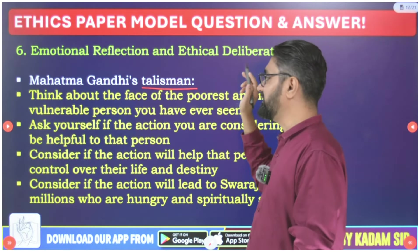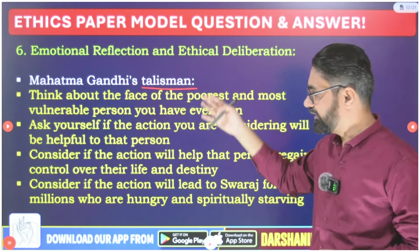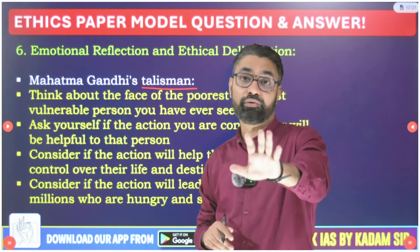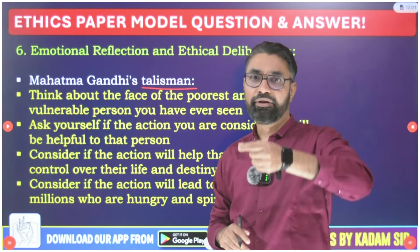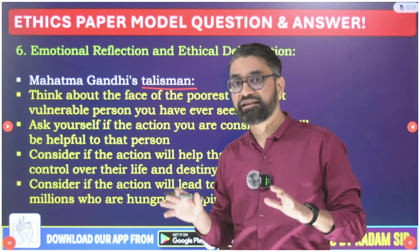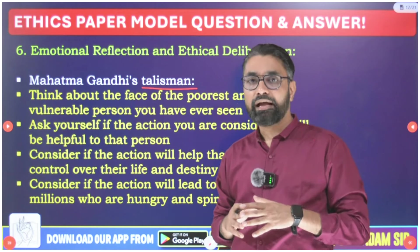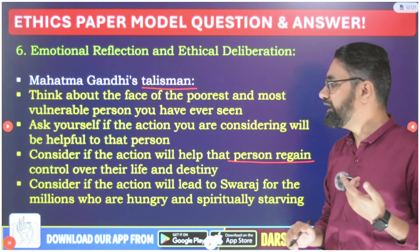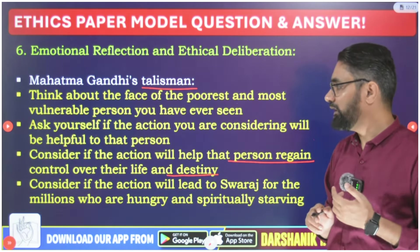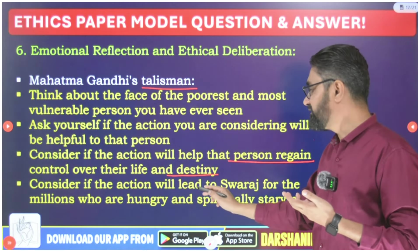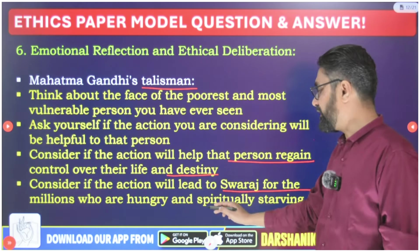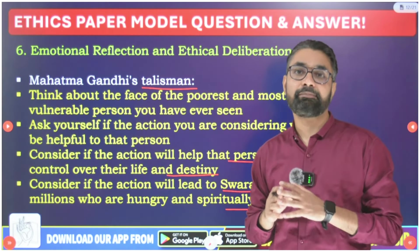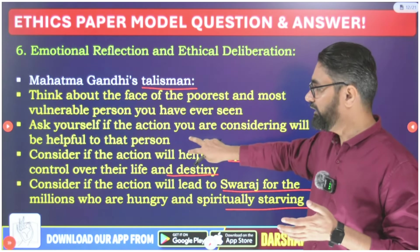Sixth: Gandhi's Talisman. Gandhi said that whenever you are facing a moral dilemma, bring the face of the most poor, exploited person you've met in life and contemplate whether your decision will help that person regain control over their life and destiny — whether the action will lead to 'swaraj' for the millions who are hungry and spiritually starving — and then take the decision based on this contemplation.